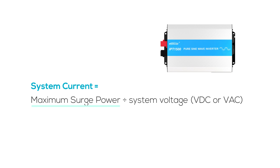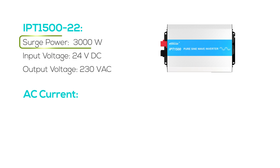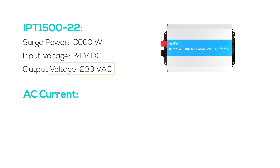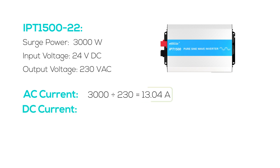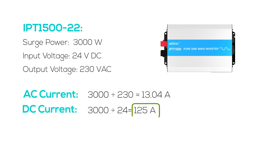Second method — when load details are not clear — take the maximum surge power of your inverter and divide it by the system voltage. Be sure to use the inverter's peak or surge power, not the continuous rating. For the AC current calculation: given a surge power of 3000 watts and AC voltage of 230 volts, the AC surge current is 13.04 amps. For the DC current during the surge, with surge power at 3000 watts and system voltage at 24 volts, the DC surge current works out to 125 amps.